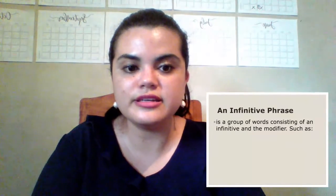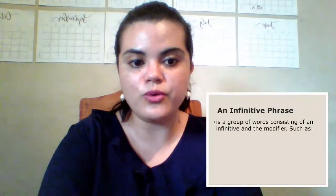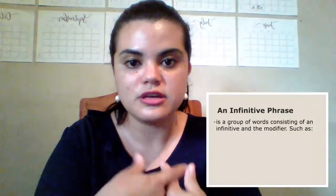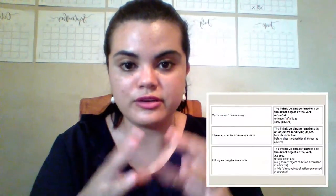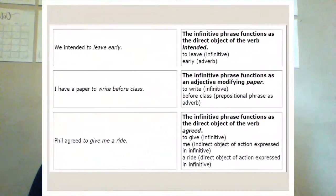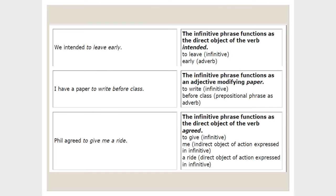An infinitive phrase is a group of words consisting of an infinitive and its modifiers and other words. The first example: 'We intended to leave early.' The infinitive phrase functions as the direct object of the verb 'intended.' 'To leave' is the infinitive, and 'early' is an adverb modifying it — so the phrase works as a direct object, describing how we intended to do it.